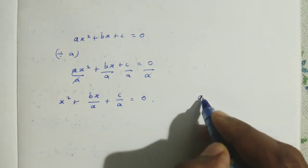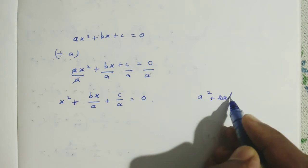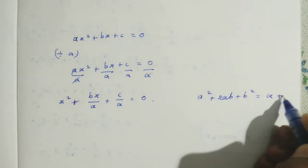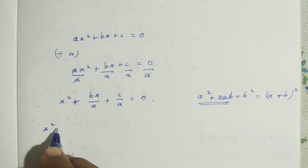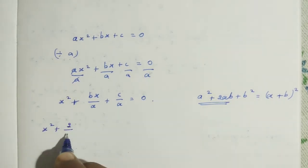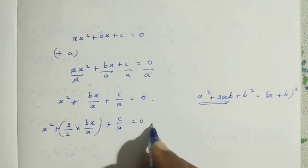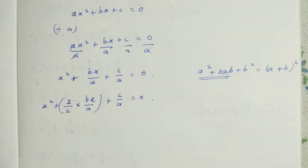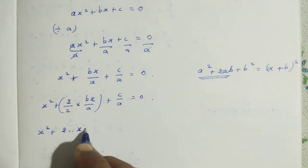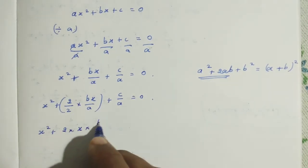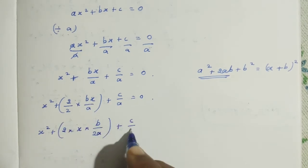Next step: we make this into the form of the identity A squared plus 2AB plus B squared equals (A plus B) whole squared. Looking at the X squared term and X term, there is a plus in between. Now I want the 2 here. So for the second term alone, I multiply and divide by 2: X squared plus B over A times X plus C over A equals 0.